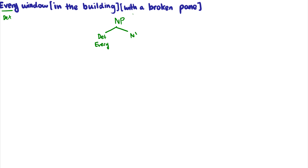So let's do 'with a broken pane.' It's an adjunct, so it's going to be the daughter of an N-bar and sister to an N-bar. We always have to do the rightmost adjunct first in our tree, otherwise the word order gets weird. 'With' is the head of a prepositional phrase, and 'a broken pane' is the complement of 'with' — so that is daughter of a P-bar, sister to a P, and then an NP.